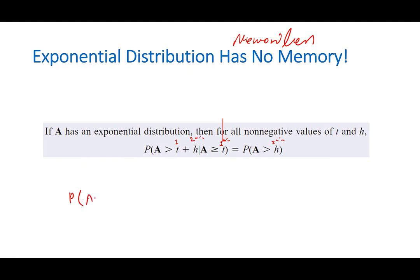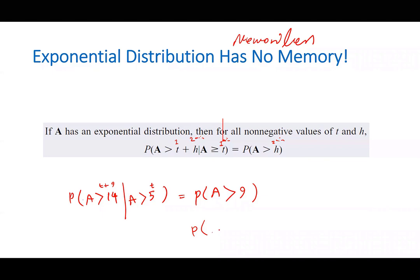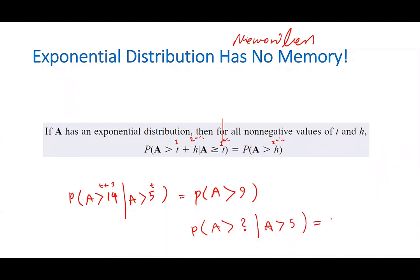For example, probability that A is greater than 14, given that A is already greater than 5 because you have already waited 5 minutes, is the same as probability that A is greater than 9. So if T is 5, then T plus 9 equals 14. This is the memoryless property, and in queuing systems we use M to show that the arrival process follows an exponential distribution, because M stands for memoryless.